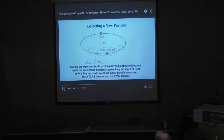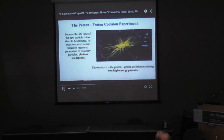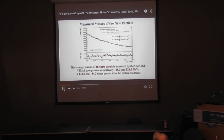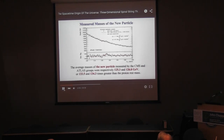During the experiments, protons travel in opposite directions inside the accelerator at speeds approaching the speed of light before they are made to collide at two particle detectors: the ATLAS detector and the CMS detector. Because the lifetime of the new particle is too short to be detected, its mass was determined based on measured parameters of its decay particles. The average masses of the new particle measured by the CMS and ATLAS groups were respectively 125.3 and 126.0 GeV, or 133.5 and 134.3 times greater than the proton rest mass.